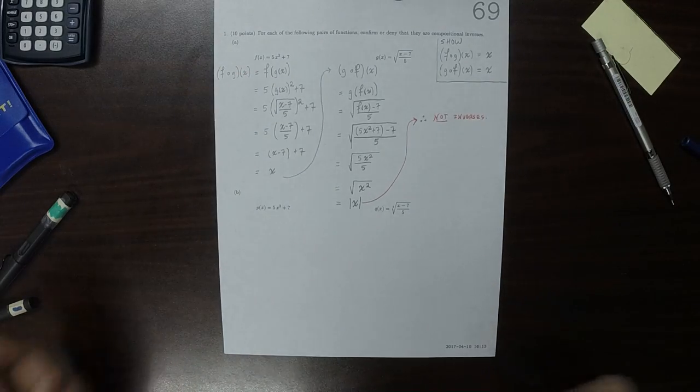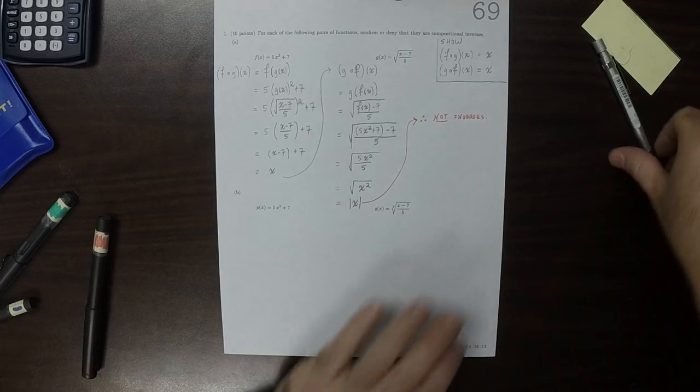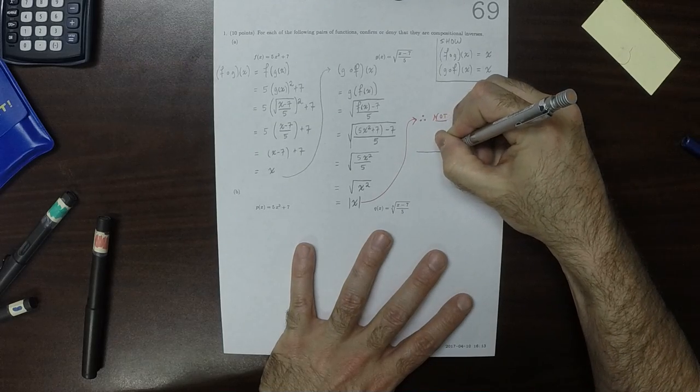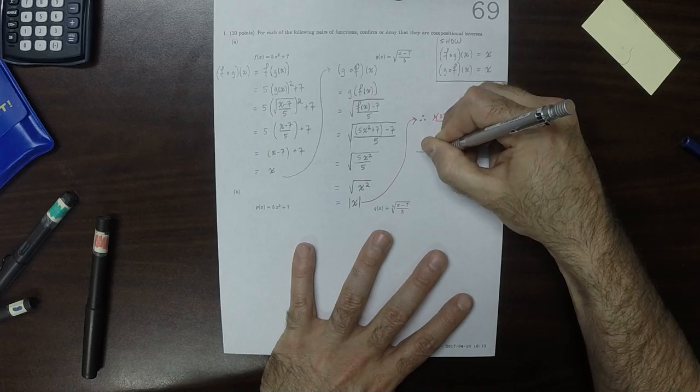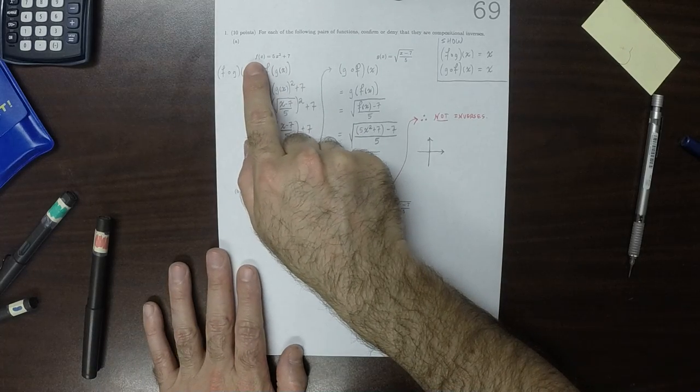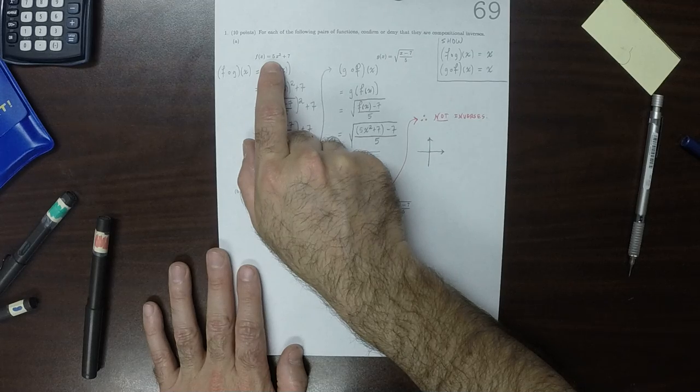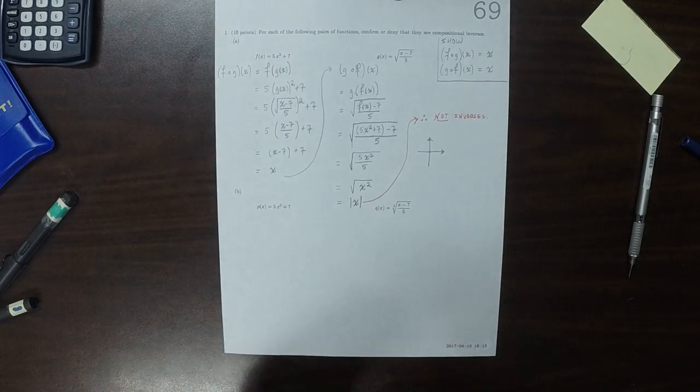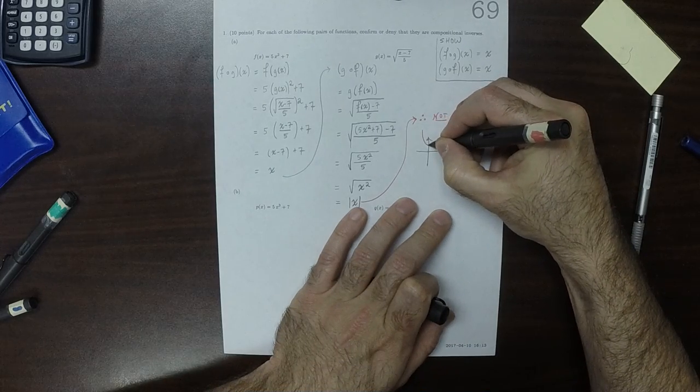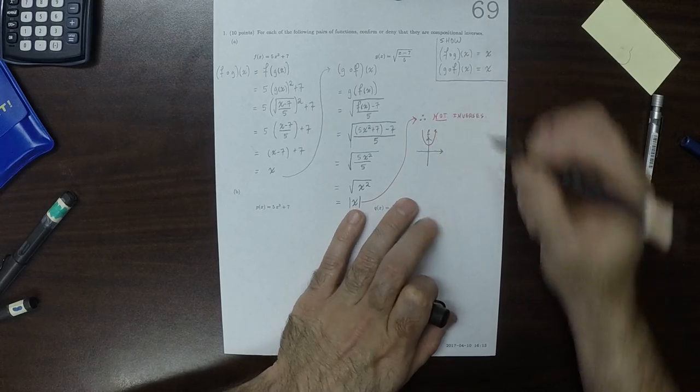An alternative way to answer this question, it would be much faster, is to observe the following. Here is the plot of f. So f is a quadratic that's been scaled with a positive and greater than one scaling factor, so it's a very tall sharp quadratic, and then it's shifted up a little bit. So f looks like this.